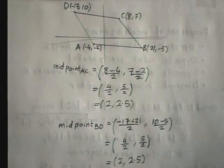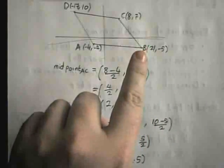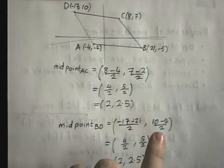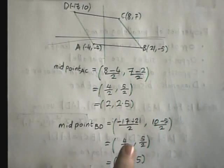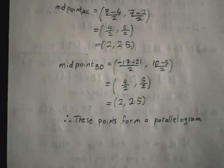Now I find the midpoint of the other diagonal, BD. Taking the x-coordinate from D, which is minus 17, and from B, which is 21, adding them together and dividing by 2, and the y-coordinate is given by 10 from D and minus 5 from B, divided by 2. Following that through gives 2 and 2.5 — the same midpoint. Since the midpoints are equal, those points form a parallelogram. The question asks whether the quadrilateral is a parallelogram, so the answer is yes.